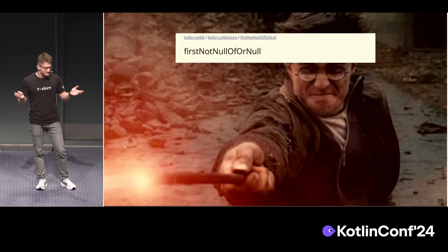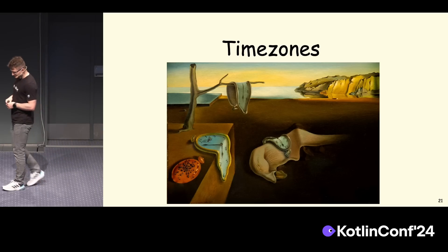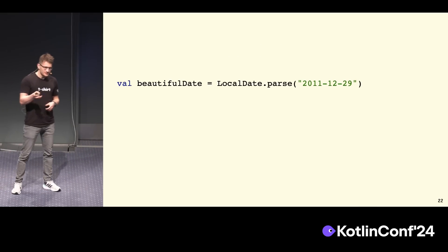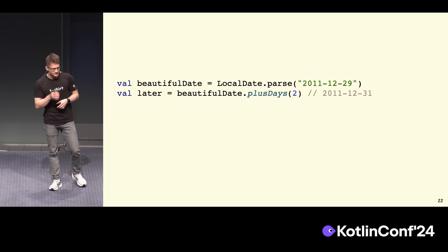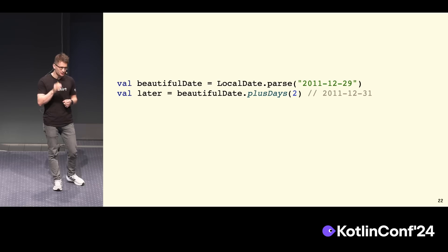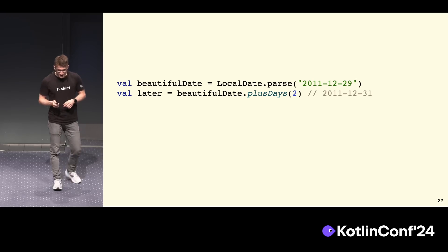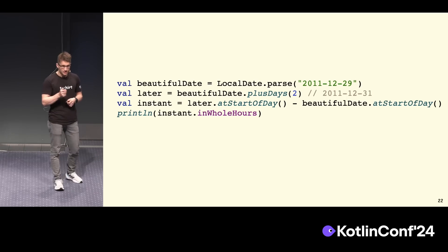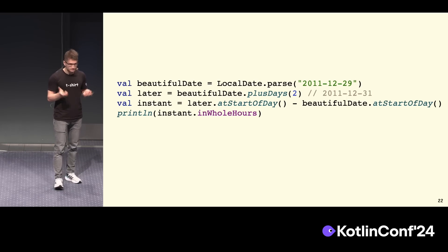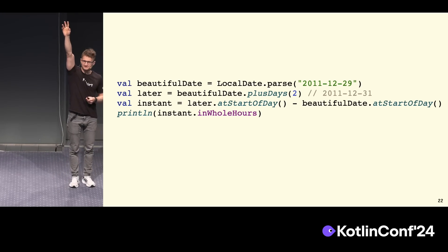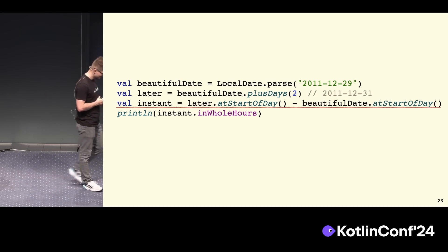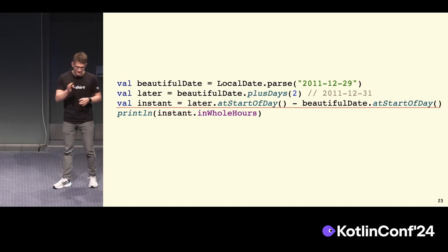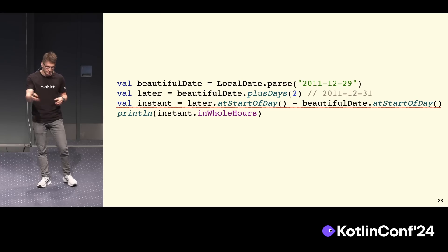Let's continue with something pleasant and simple — not strings: time zones. Let's take a look at this date: 29th of December 2011. We want to add two days to get 31st of December. But we're experienced engineers — we don't really trust computers. So we want to be extra sure the difference is exactly two days. We subtract one from the other and check how many hours are there; I would expect something around 48. The answer is: this code doesn't compile. The reason is time zones — those are calendar dates, and they don't make much sense without a time zone. Because right now it can be 29th of December here, and in the United States it can be 28th of December.